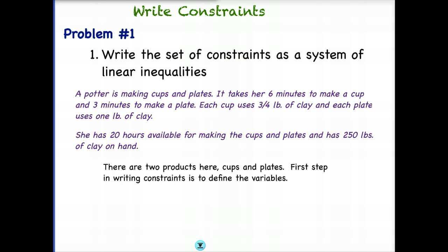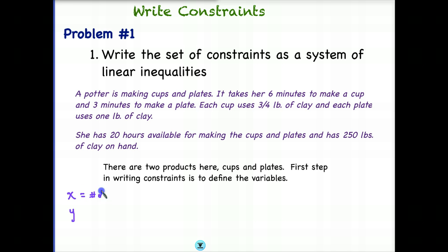First, we need to define our variables prior to writing constraints. We'll use X and Y because it'll be easier to graph. Let's call X the number of cups, and Y the number of plates. It doesn't actually matter which one, but it'll just help to keep it organized. So we've defined our variables — now we need to go through and write a set of constraints.